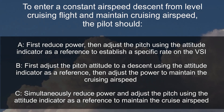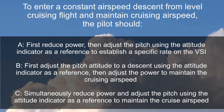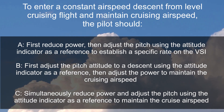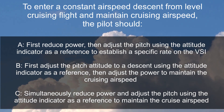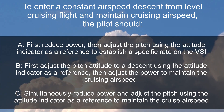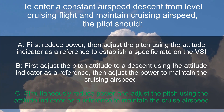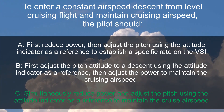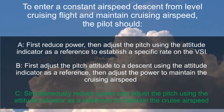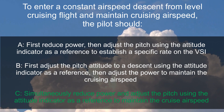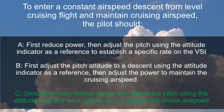So the answer to the question — to enter a constant airspeed descent from level cruising flight and maintain cruising airspeed, the pilot should — is C: simultaneously reduce the power and adjust the pitch using the attitude indicator as a reference to maintain the cruising airspeed.